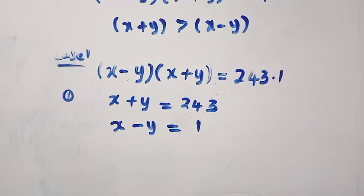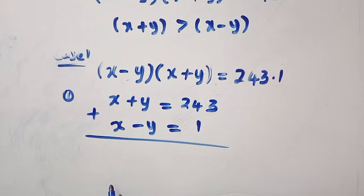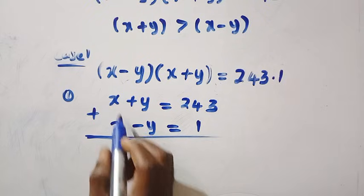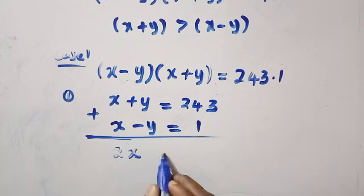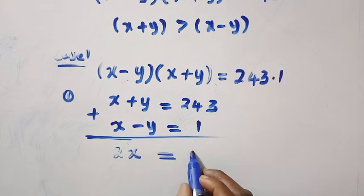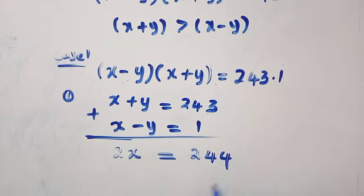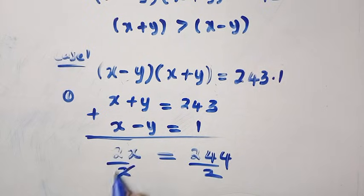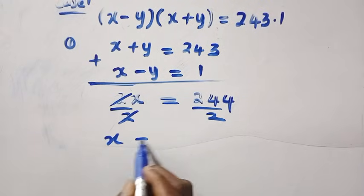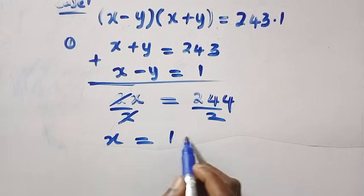Solving this simultaneously, we are going to add these two equations together. So by adding, we have x plus x, that is 2x, equals 243 plus 1, which gives us 244. Dividing by 2, we have x equals 122.